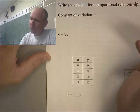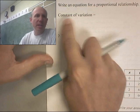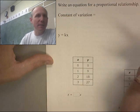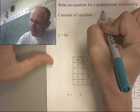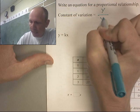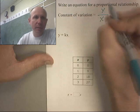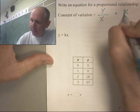So I'm going to write an equation for a proportional relationship. And by this point, we've probably talked about how to find a constant of variation. Constant of variation is, I take a y value, and I'm dividing it by the x value. And that constant of variation is represented by the letter k.